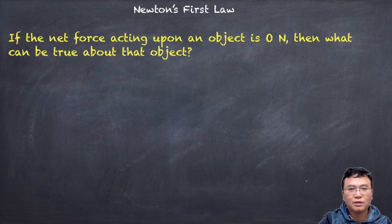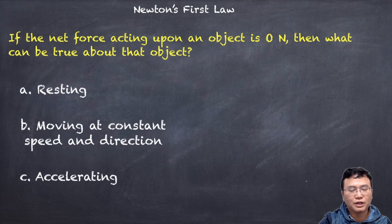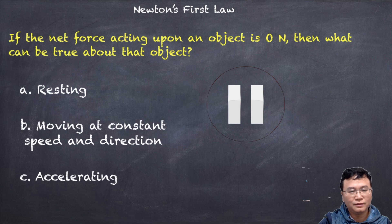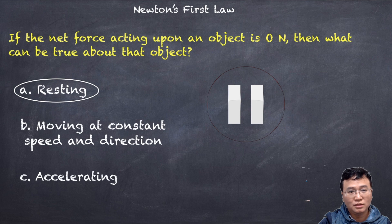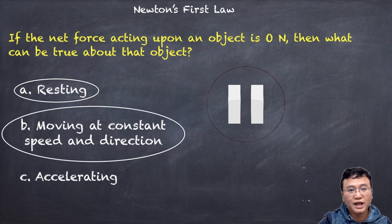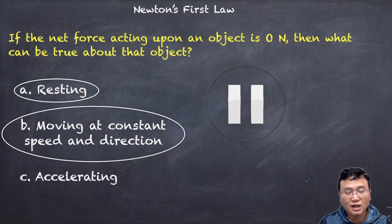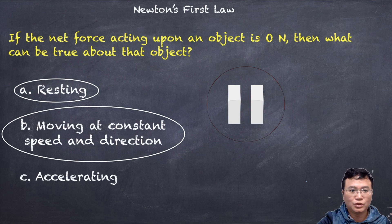If the net force acting upon an object is zero newtons, what can be true about that object? The correct answer is: you can say the object is resting, or you can say the object is moving at a constant speed and direction — in other words, constant velocity. Velocity implies both speed and direction. So those are the two things you can say.